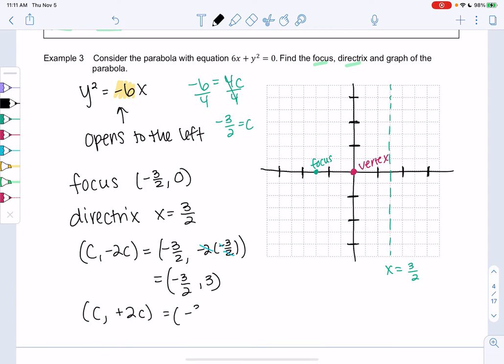So -3/2 and then we'll go up to 3, -3/2 and then down to -3. You'll notice, again, that makes that focal chord, so those should all be on a line together, those two points in the focus.